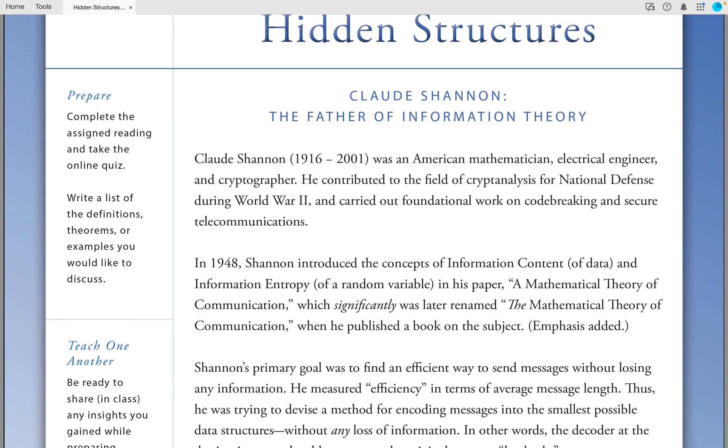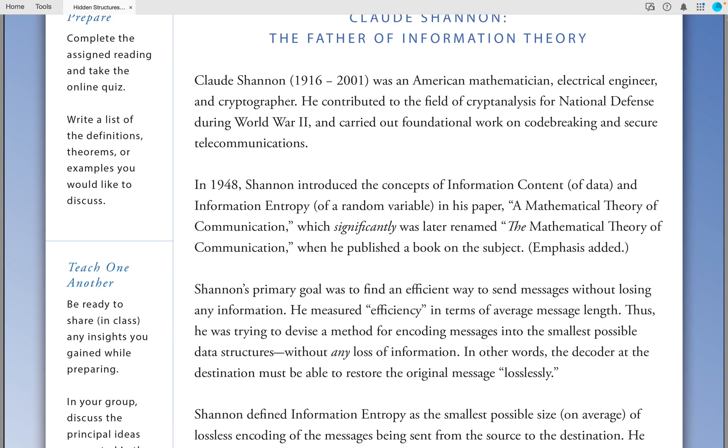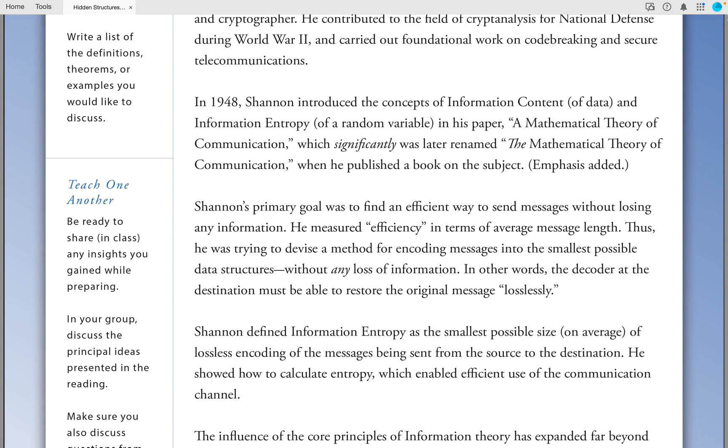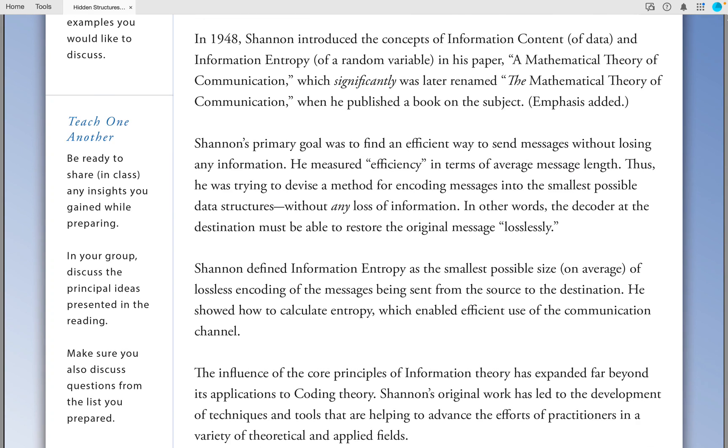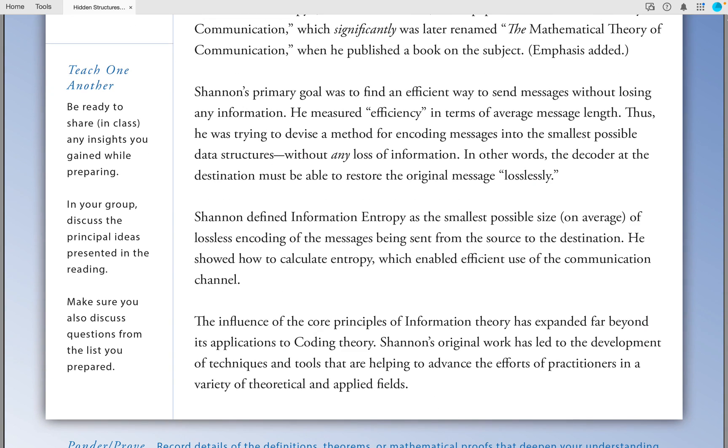Shannon's primary goal was to find an efficient way to send messages without losing any information. He measured efficiency in terms of average message length. Thus, he was trying to devise a method for encoding messages into the smallest possible data structures without any loss of information.